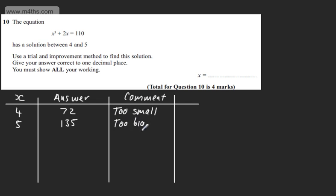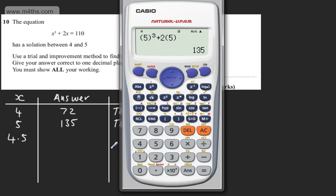Our comment now is that this is too big. So we can see now that the answer or the solution to this equation lies somewhere between the two. We're now going to try 4.5. In this column, we only have values to one decimal place. So I'm not going to be doing 4.51, 4.52. We're just doing it to one decimal place for now.